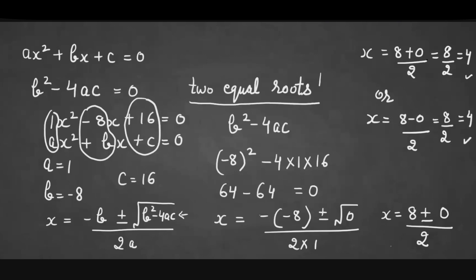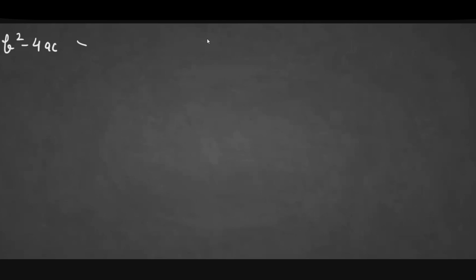That's the meaning of two equal roots — we get the same value for both. Now let's move to the next rule: if b² - 4ac is greater than 0, then the equation has two different roots.